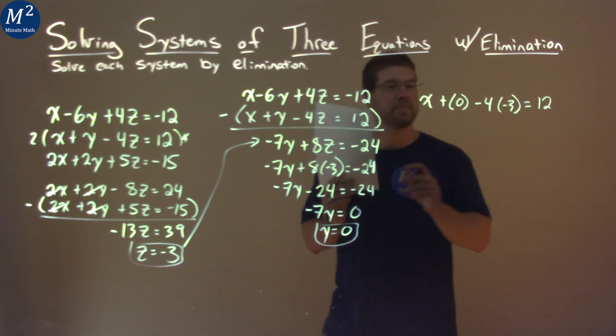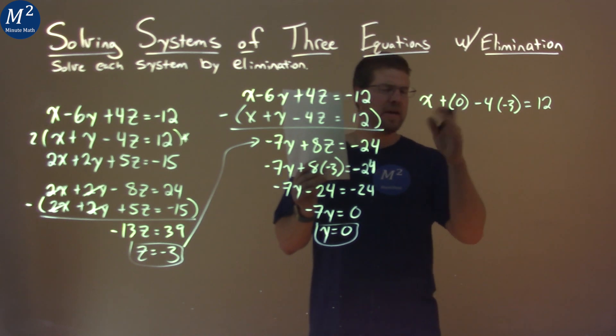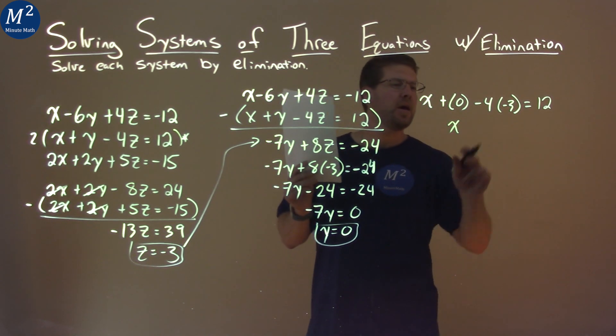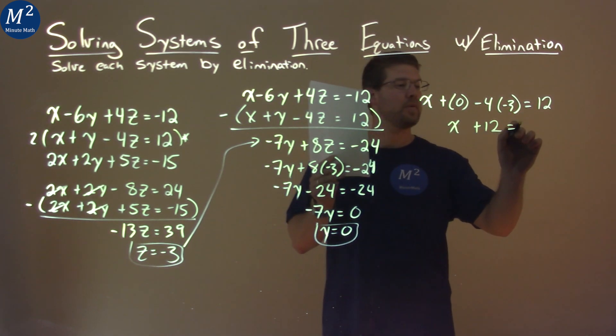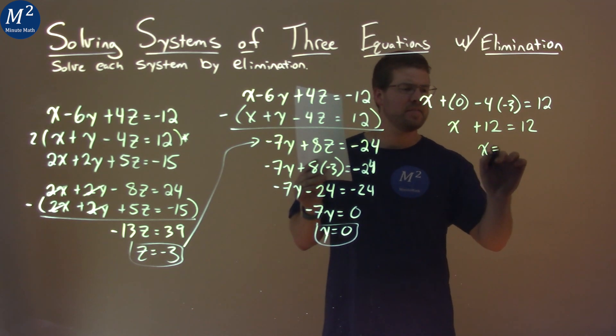So now let's solve for x. Well, 0 we don't really need, right? Adding 0 doesn't do anything. And negative 4 times negative 3, that's positive 12, equals 12. Well, I subtract 12 from both sides, and x equals 0.